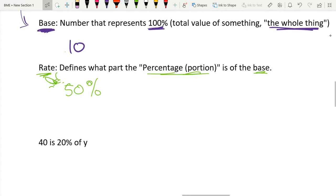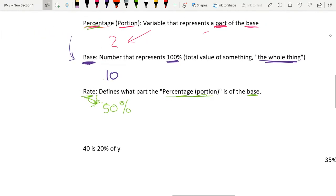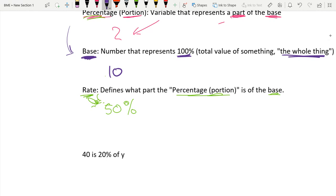So we have a problem over here. 40 is 20% of Y. So let's try identifying our base. Well, if 40 is 20% of Y, that would mean that our base, our whole, is Y. This is our base. And our rate, well, we're taking 20% of Y, so our rate is just 20%. And our percentage or portion is going to be 40 because 40 is a part, it's 20% of our base Y. So this is going to be our percentage or portion.